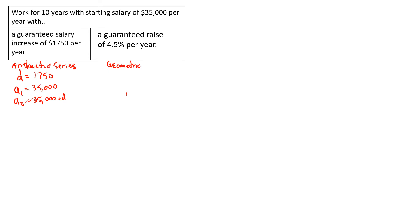The second option is a geometric series, because we're multiplying each year's salary by a common ratio of 1.045. You might recognize this from compound interest: if we want to know how much we'd make in the second year, we take the first year's salary of $35,000 and multiply by 1 plus r — where r is the percent increase in decimal form. So here the common ratio r is 1.045, since that whole expression is r.